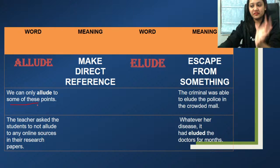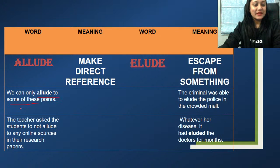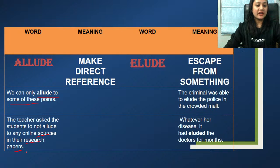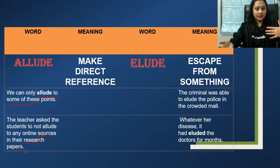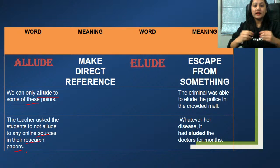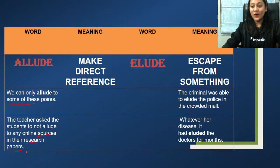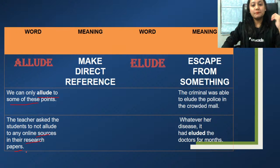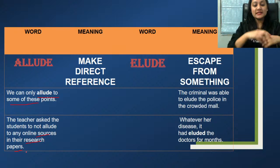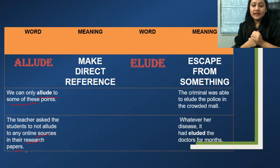Next is 'allude' and 'elude'. ALLUDE means to make a direct reference — 'we can only allude to some of these points' and 'the teacher asks students not to allude to any online sources in their research papers.' ELUDE means to escape from somewhere — 'the criminal was able to elude the police in the crowded mall' and 'whatever her disease, it had eluded the doctors for months.'